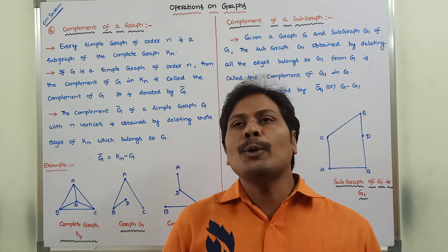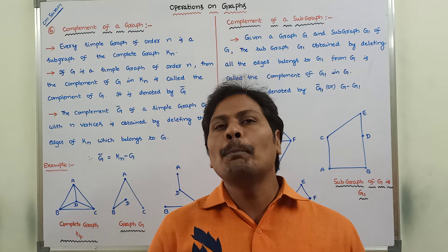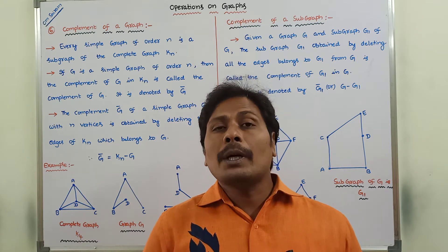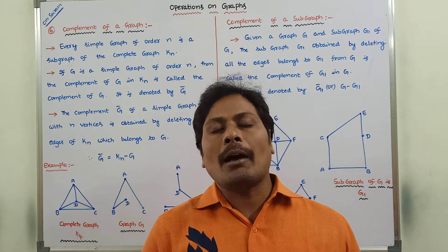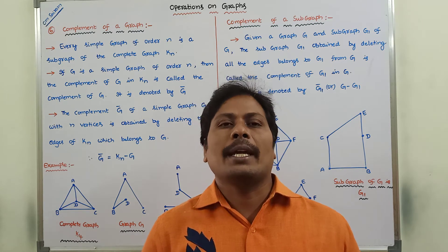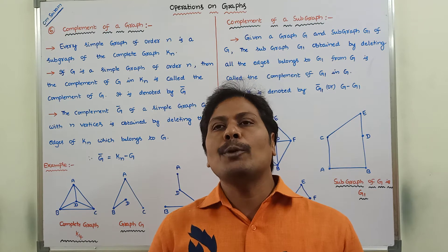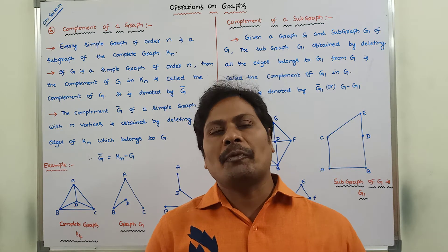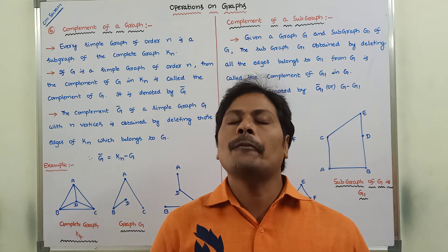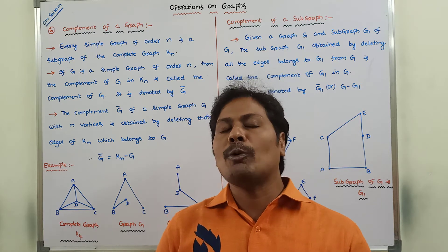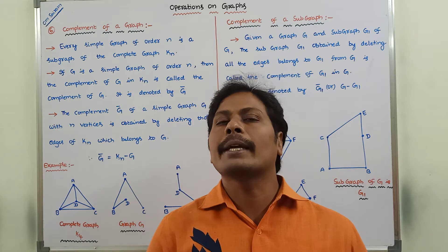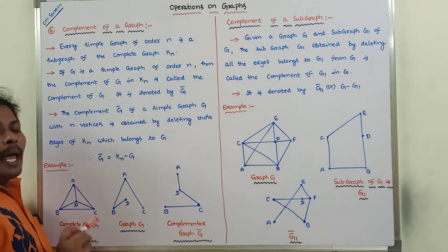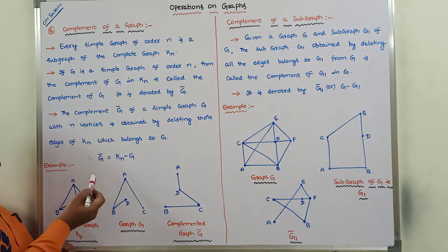We already know that every simple graph of order N is a subgraph of complete graph Kn. This is an important point from previous videos. Now we go for how to find out the complement of a given graph. I am explaining with one example.